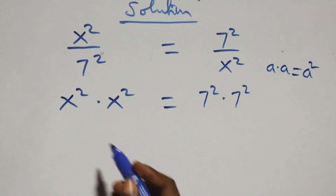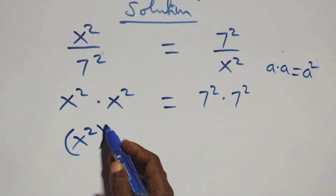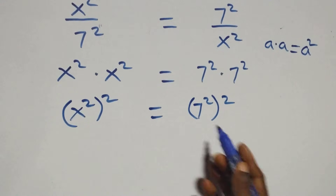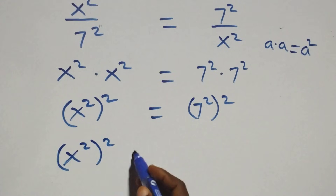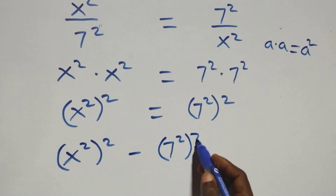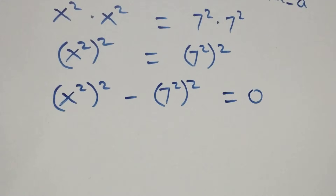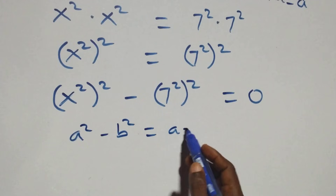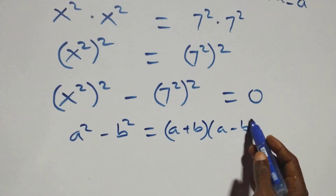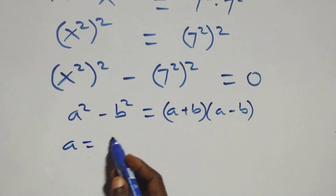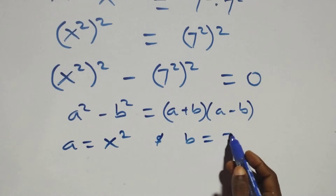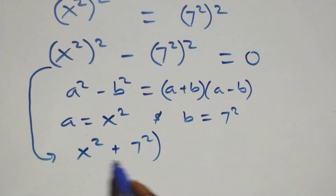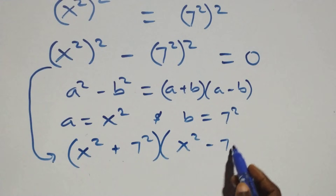We can write this as (x squared) squared equals (7 squared) squared. Taking the right-hand side to the left-hand side, we have (x squared) squared minus (7 squared) squared equals zero. This follows the difference of squares identity: a squared minus b squared equals (a plus b)(a minus b), where a is x squared and b is 7 squared.